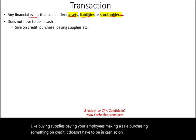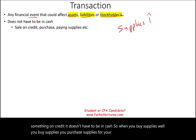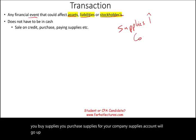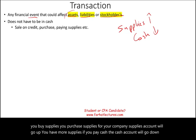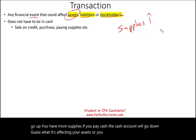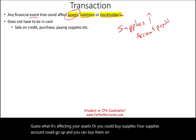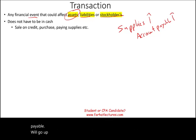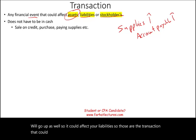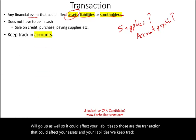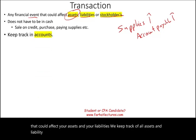For example, when you buy supplies, the supplies account will go up because you have more supplies. If you pay cash, the cash account will go down — it's affecting your assets. Or you could buy supplies on account, your supplies account goes up and your accounts payable goes up as well, affecting your liabilities. We keep track of all asset, liability, and stockholders' equity accounts in something called accounts.